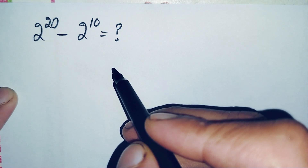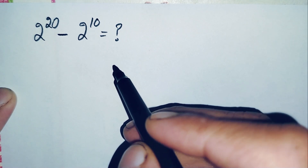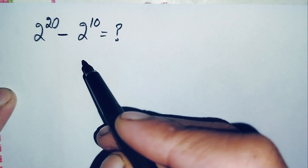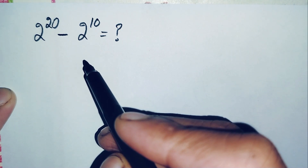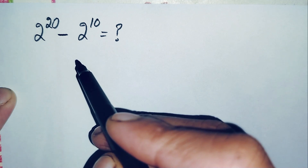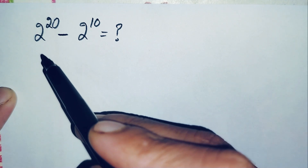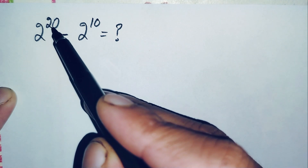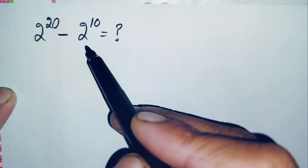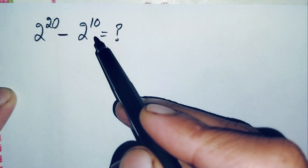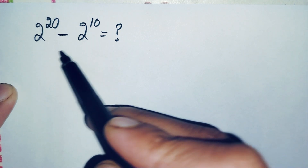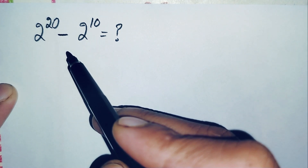Hello everyone, you are welcome. How to evaluate and find the value of this beautiful math problem, which is 2 raised to power 20 minus 2 raised to power 10. Now how can we solve this math problem?